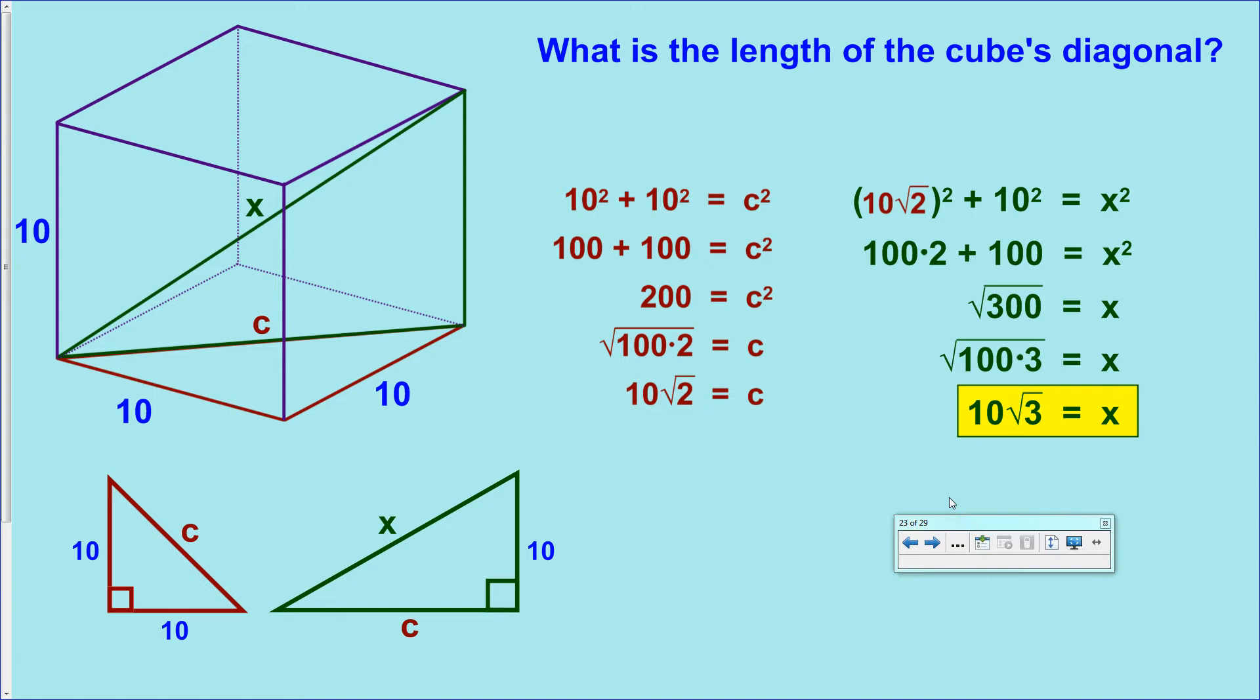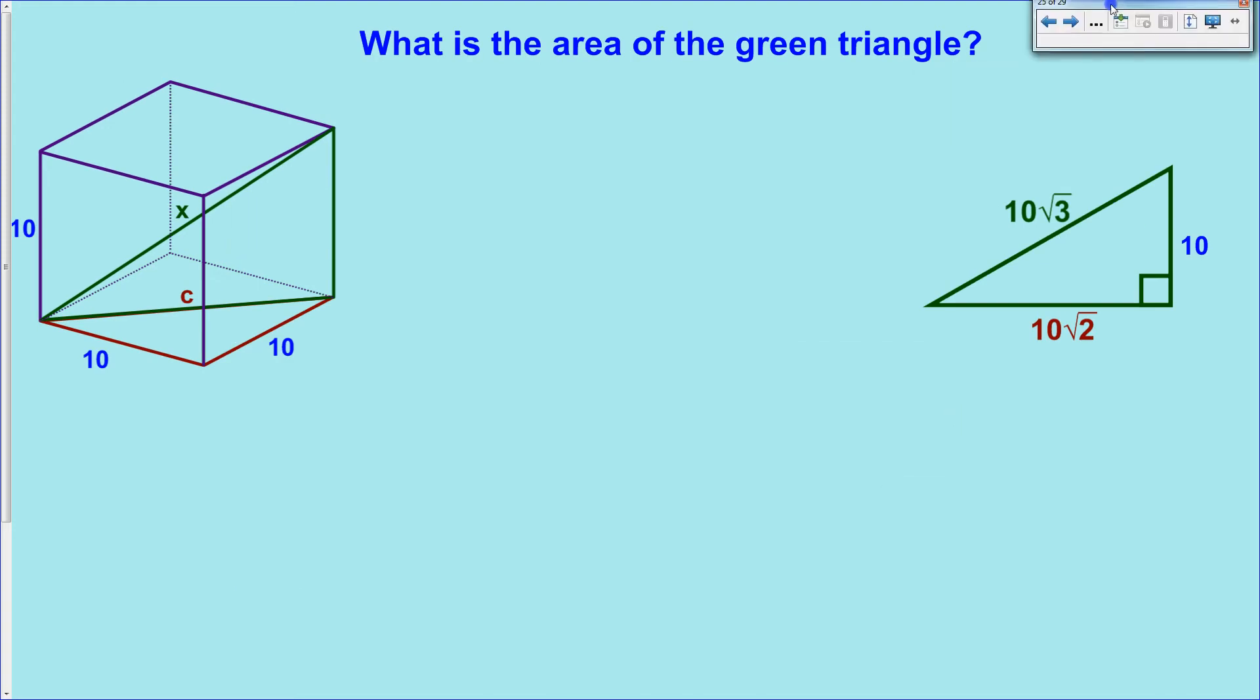Now, just to drive the point home and work with square roots a little bit more, I'm going to ask a second question, which is, what is the area of the green triangle? Which means that you have to remember what the area formula is for a triangle, and you have to work with square roots a little bit more. So let's take a closer look at that green triangle. If you label it up with all the information that we found previously, one of its legs is 10 times the square root of 2, the hypotenuse is 10 times the square root of 3, and the side of it, the other leg, is just plain old 10.